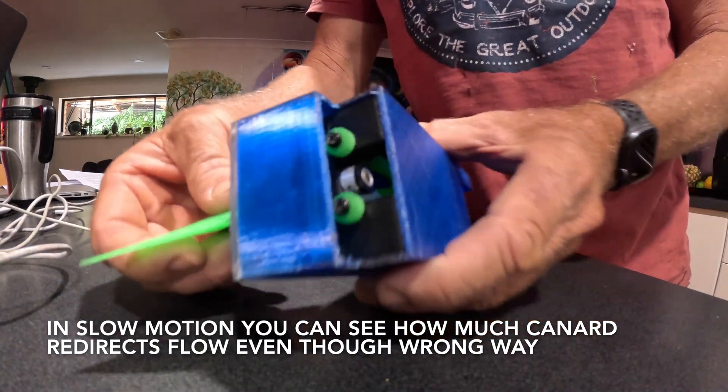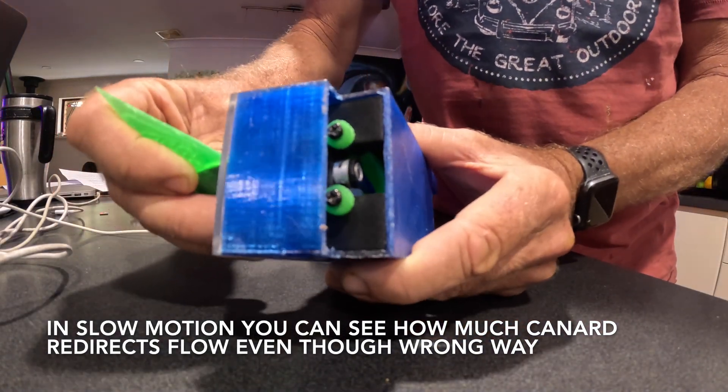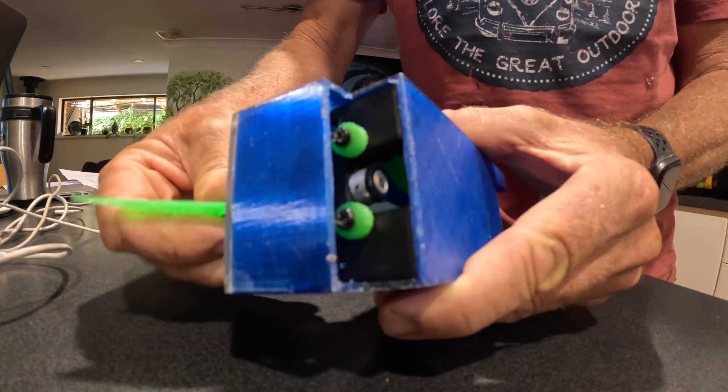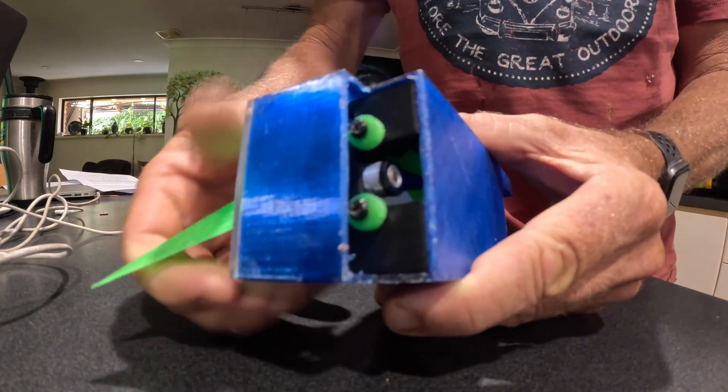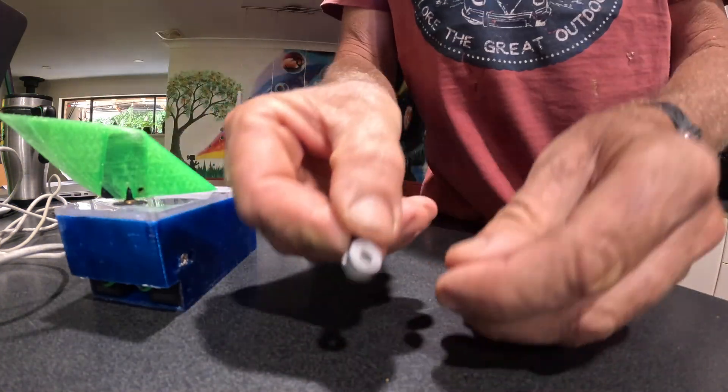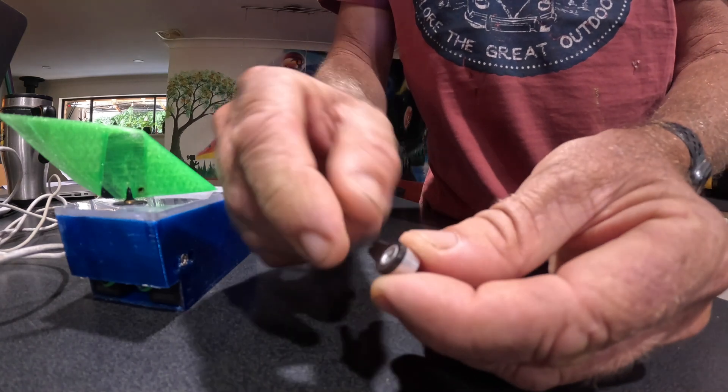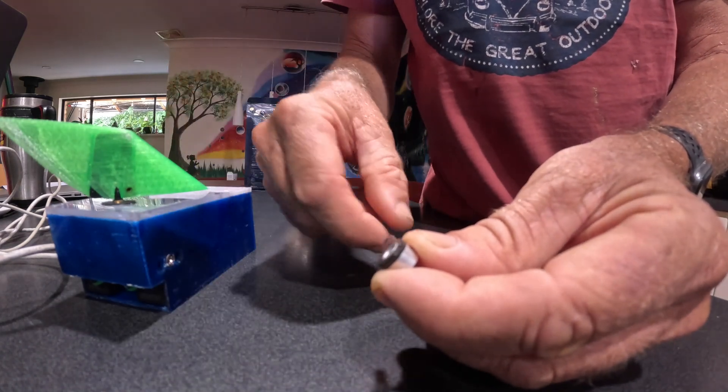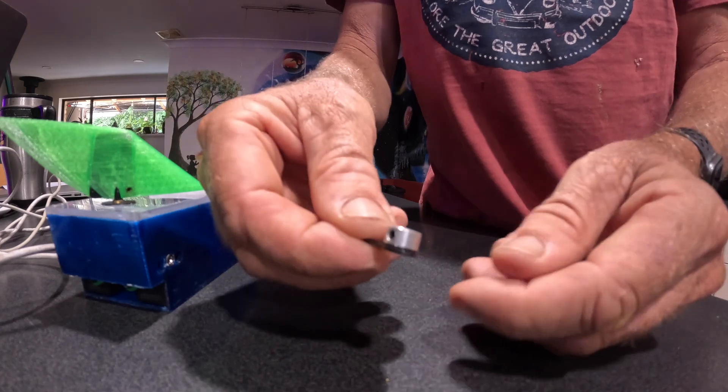Back home I found the weakness in the model boat rudder was the steering horn rotated in relation to the shaft collar. So despite pinning the collar to the shaft, the canard could still rotate in relation to the steering horn. So the next version needs to pin the horn to the collar as well as to the shaft.